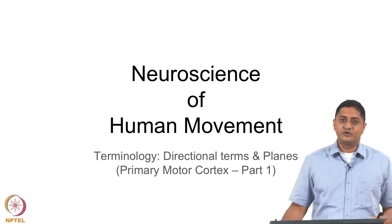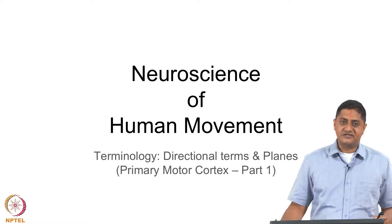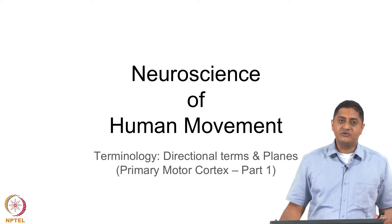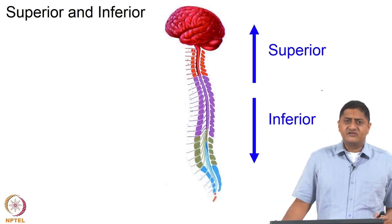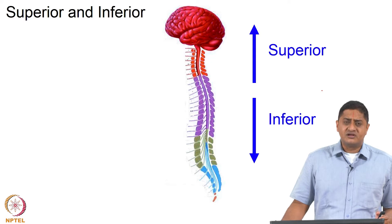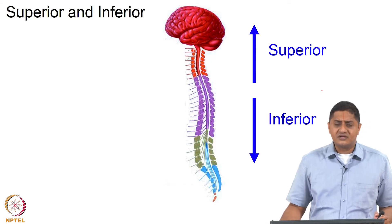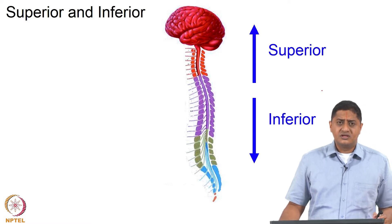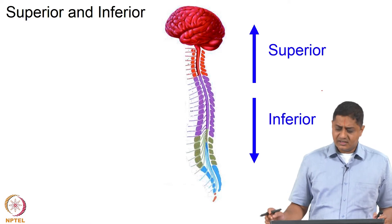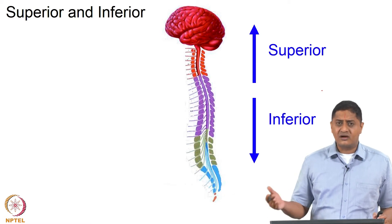Welcome to this class on Neuroscience of Human Movement. In this lecture we will be looking at directional terminology — terms that are used to refer to specific regions relative to other regions. Terms such as superior, inferior, ventral, dorsal, caudal, rostral, posterior, and anterior are used to locate specific regions relative to other regions in the spinal cord or in the brain.